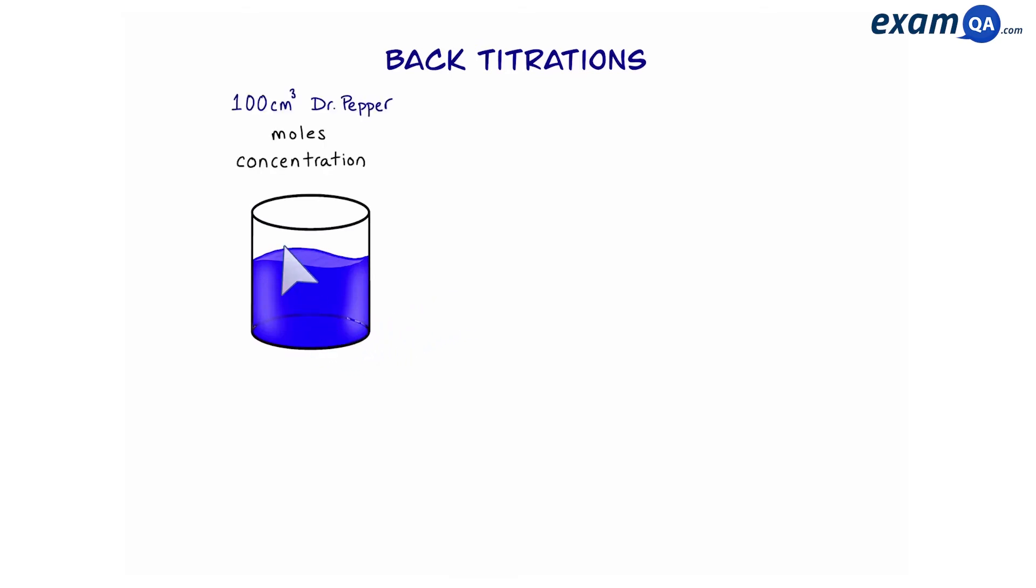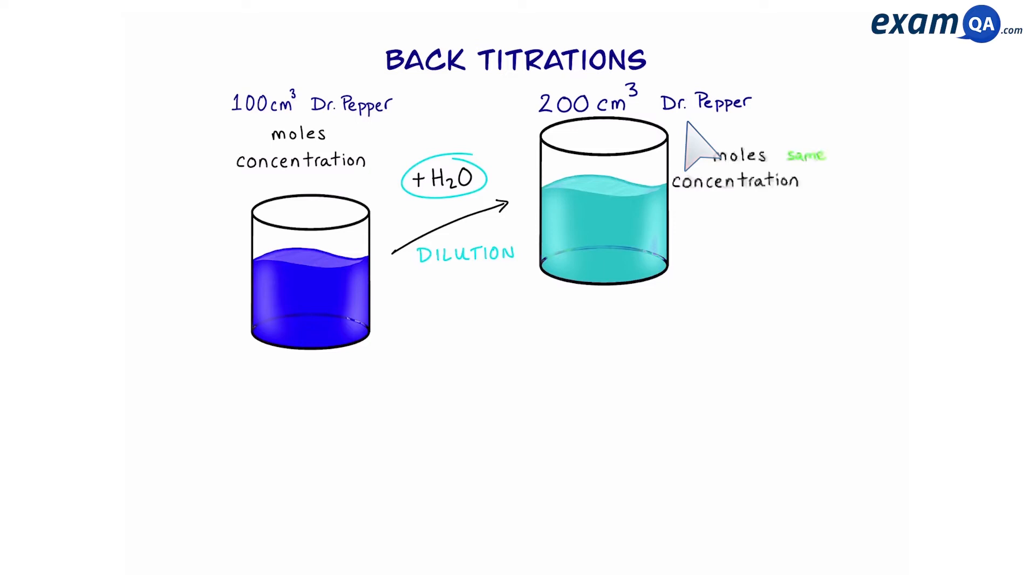So let's say I have 100 cm³ of Dr Pepper. It has a certain number of moles and a concentration. Now let's say my friends are coming over and I don't have enough left. The first thing that we could do is add water to this and dilute it. Let's say now we have 200 cm³ of Dr Pepper. The moles will be the same because the number of sugar particles in the original and in the new are going to be the same. We haven't added or removed any particles. However, because the volume is much larger, the concentration will have decreased.